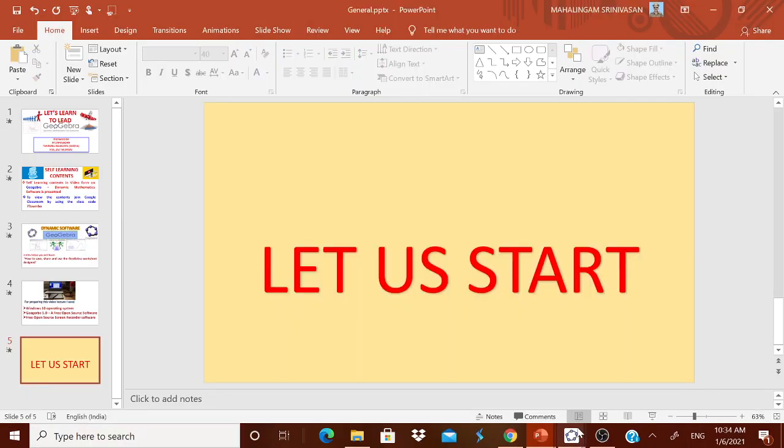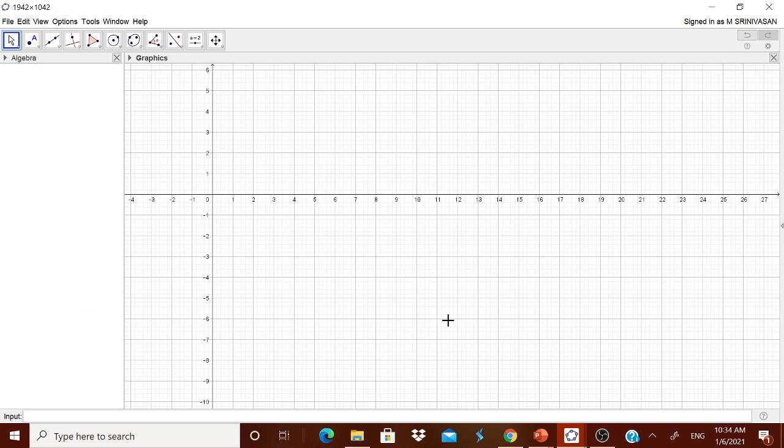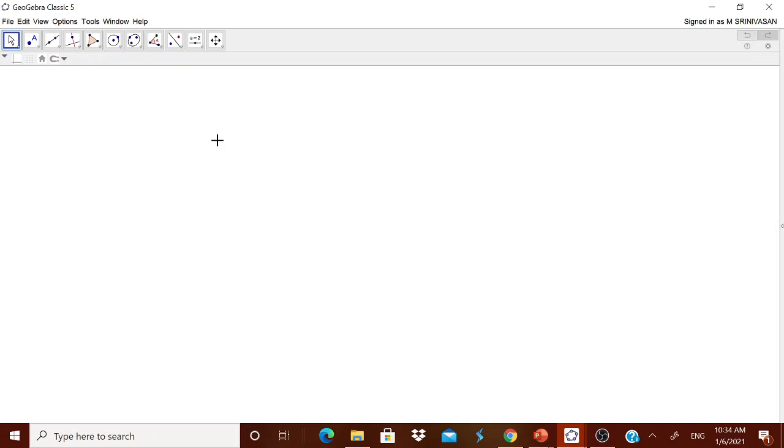First let me show you how you can save a file which you have prepared. I have opened a GeoGebra Classic 5 worksheet. Let me go for the geometry view. Now I want to show the children that cyclic quadrilateral.